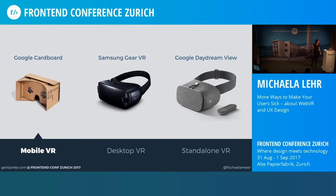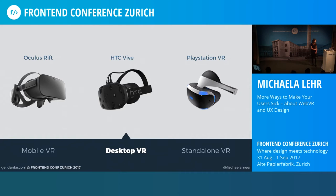Then there are desktop VR devices, which are significantly more expensive because the headset also contains the sensors and the displays, and the computing power comes from the desktop computer or gaming console. There are also special controllers for each device — the Oculus Rift comes with Oculus Touch motion controllers, the HTC Vive has two SteamVR wireless motion controllers, and the PlayStation VR can be used with the PlayStation Move controllers.